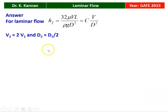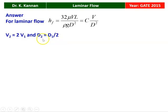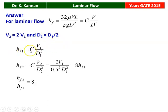For laminar flow, HF equals 32 μ V L divided by ρ g D square. Grouping constants, HF is proportional to V / D². With V2 = 2V1 and D2 = D1/2, we get HF2 = C × 2V1 / (0.5 D1)² = C × 2V1 / (0.25 D1²) = 8 × (C × V1 / D1²) = 8 × HF1. Therefore HF2 / HF1 equals 8.